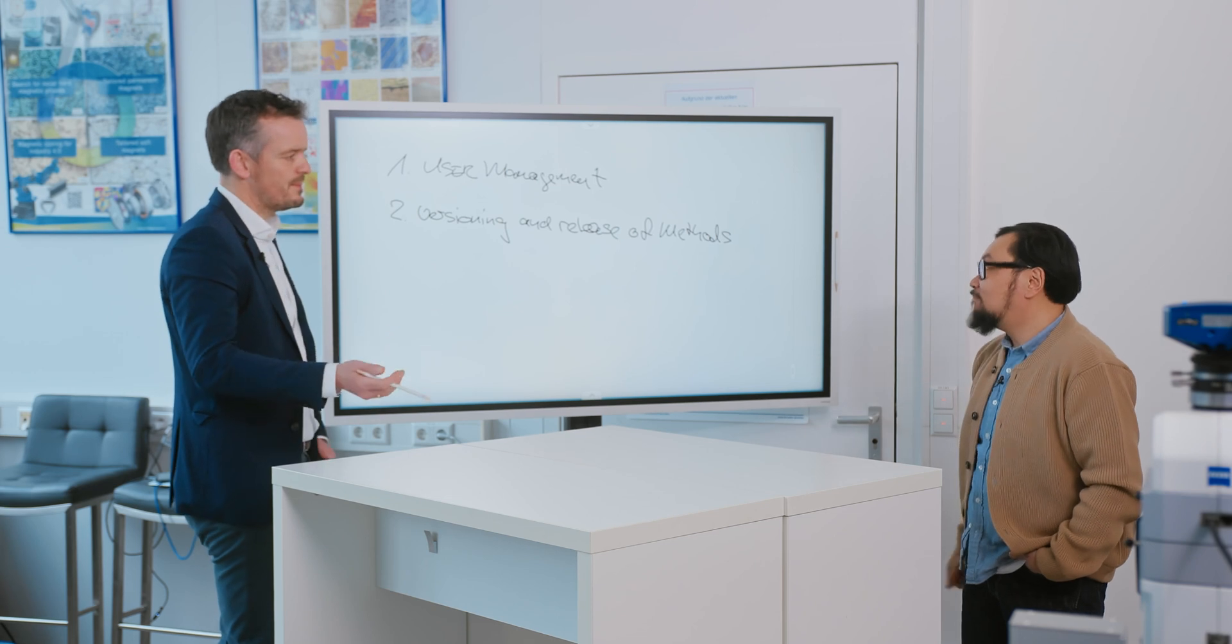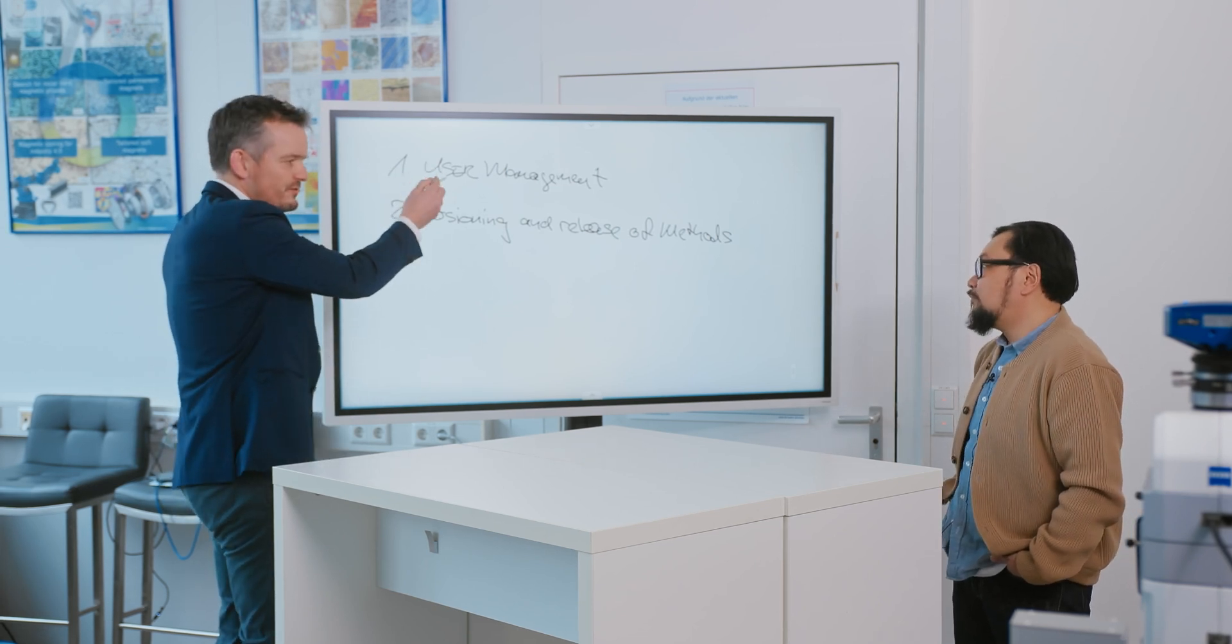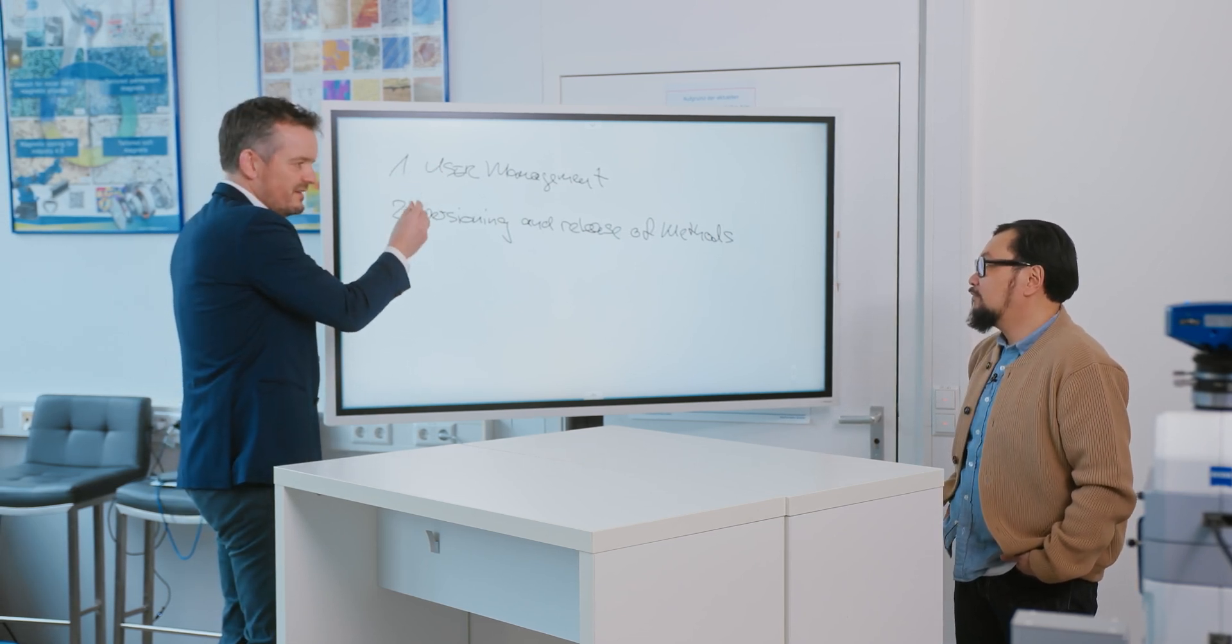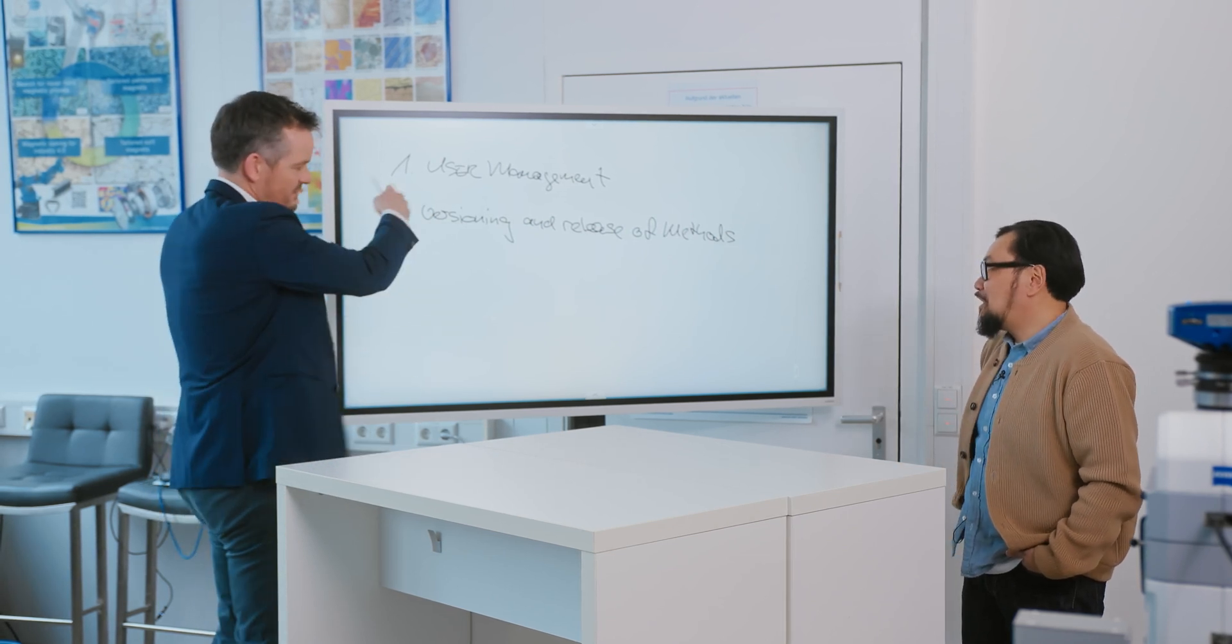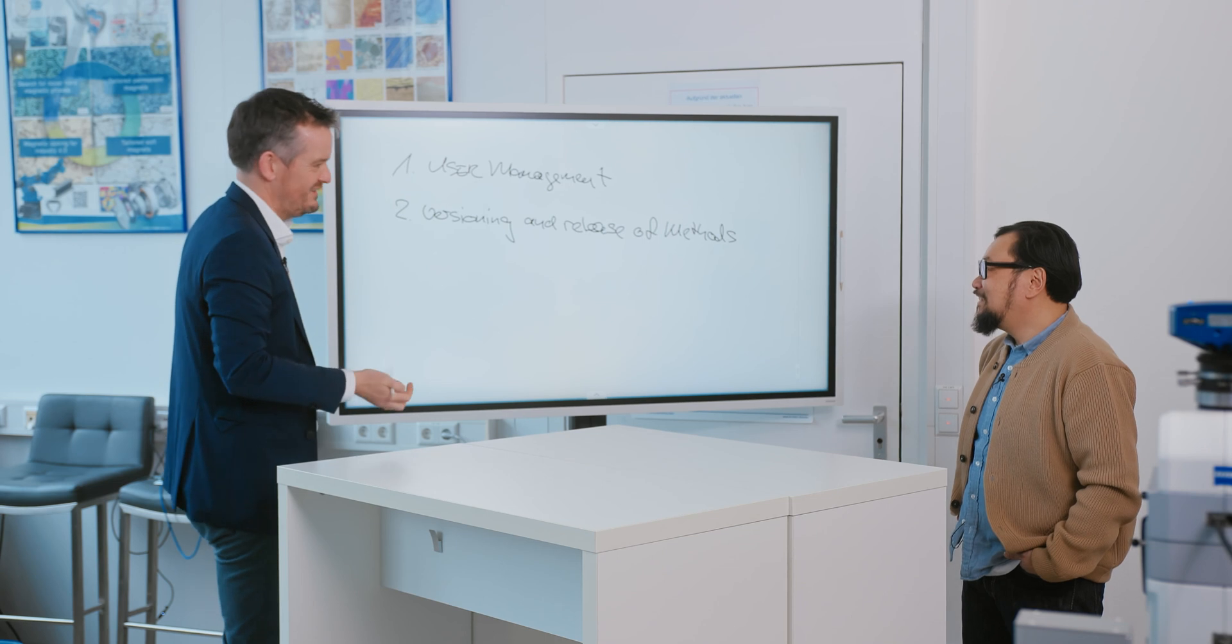Okay. So that's the second thing. It's like versioning and release of methods. So you have to manage that. Exactly. Got it. If two users use the same process, then you want to make sure that the results are the same. Okay. Sounds logical. This is in combination with user management.